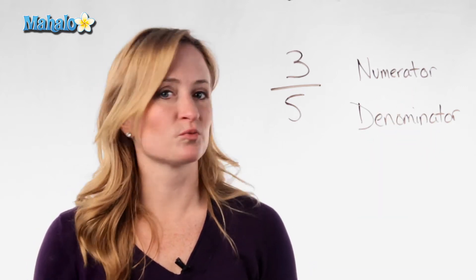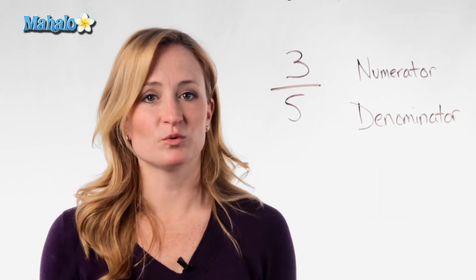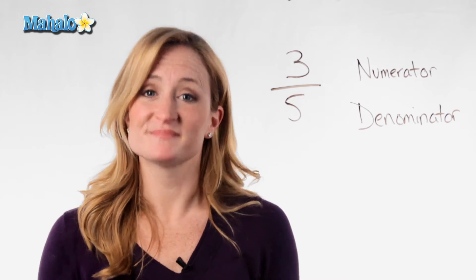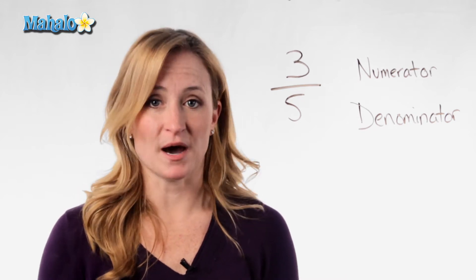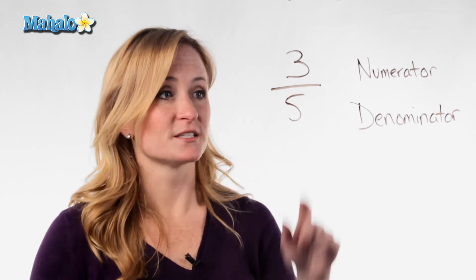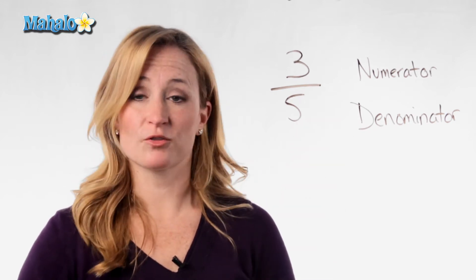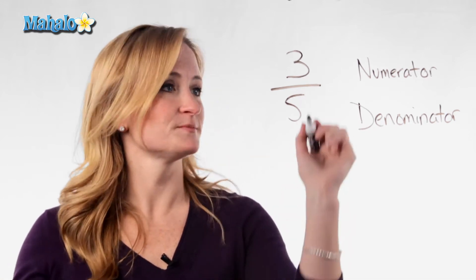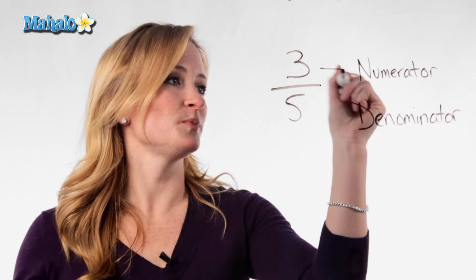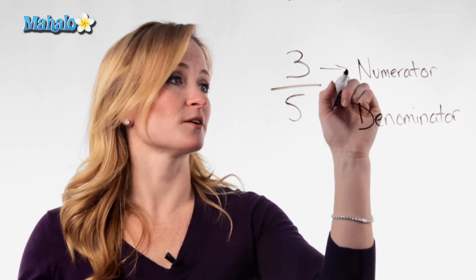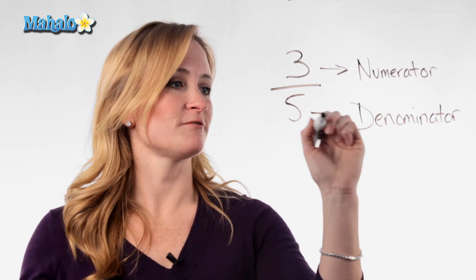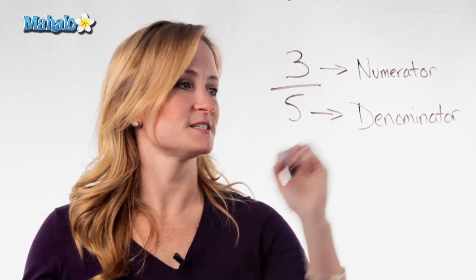Basically, they're just really big fancy words for top number and bottom number. So in this fraction, 3 over 5, 3 would be the numerator and 5 would be the denominator.